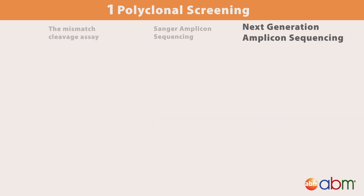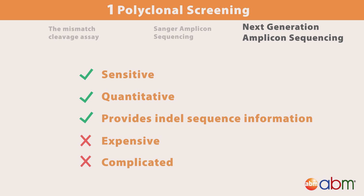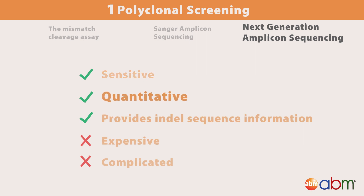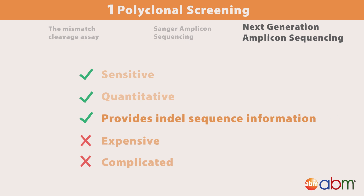Next-generation amplicon sequencing may also be used for polyclonal screening. This technique has a few advantages over others for CRISPR screening: 1. It's extremely sensitive. 2. It's quantitative. 3. It provides sequence data. However, this method is much more expensive and complicated to analyze than others.